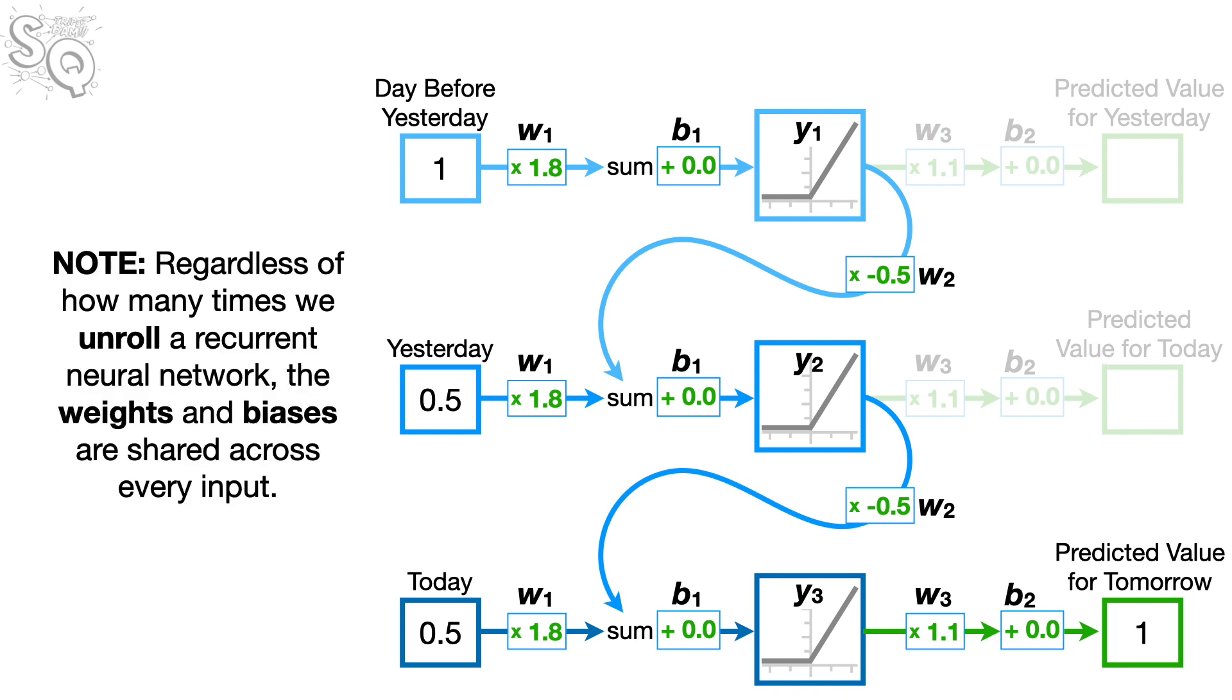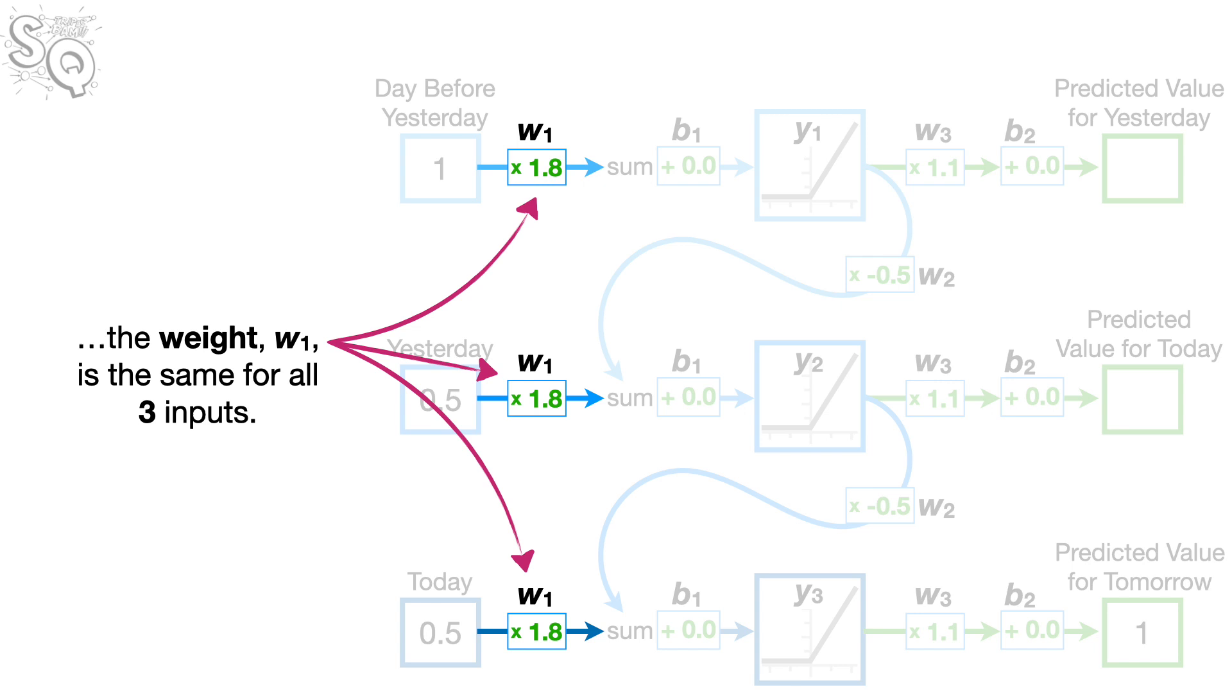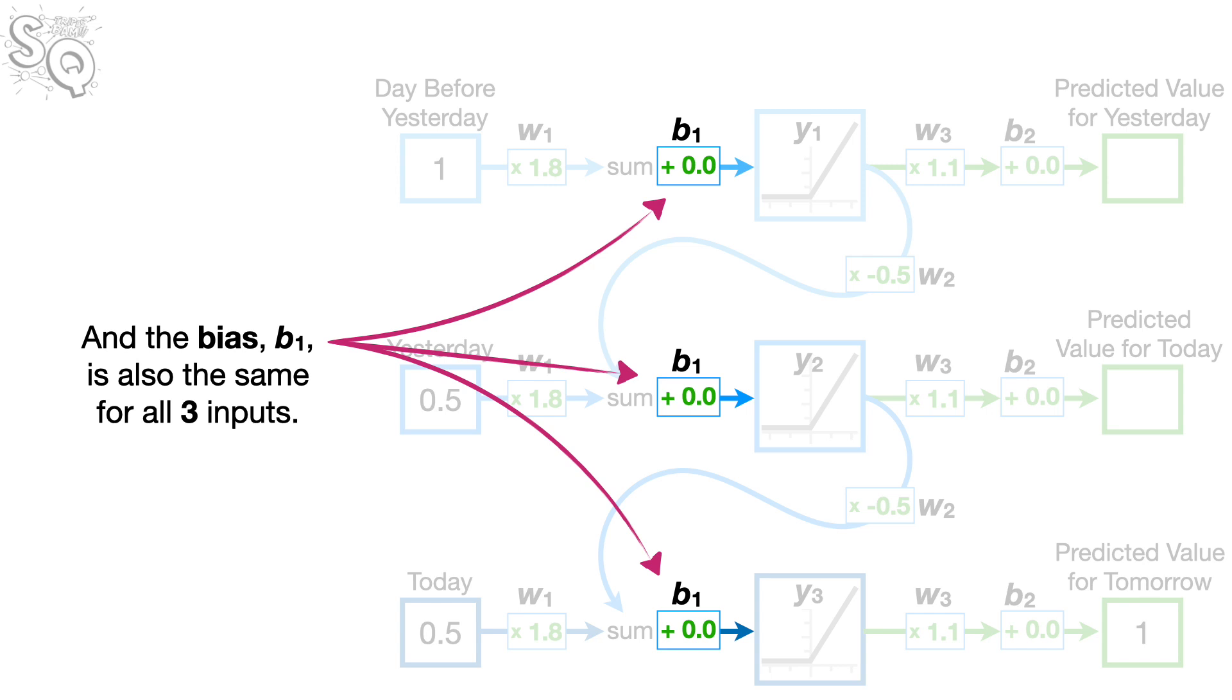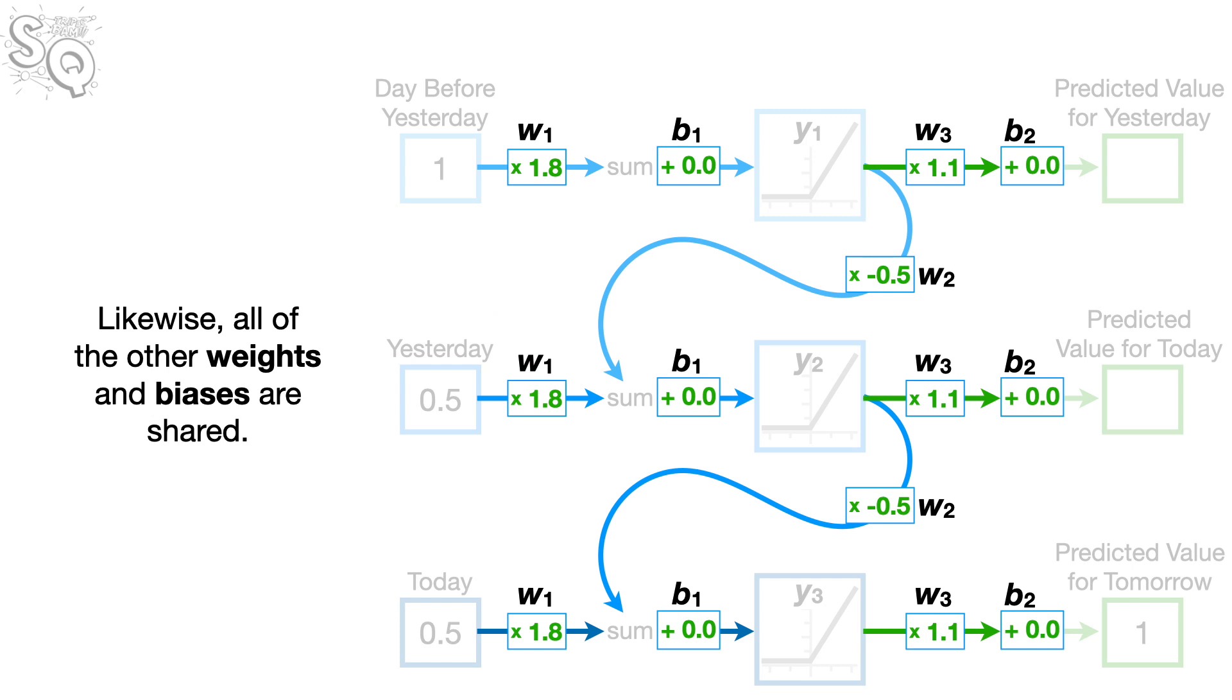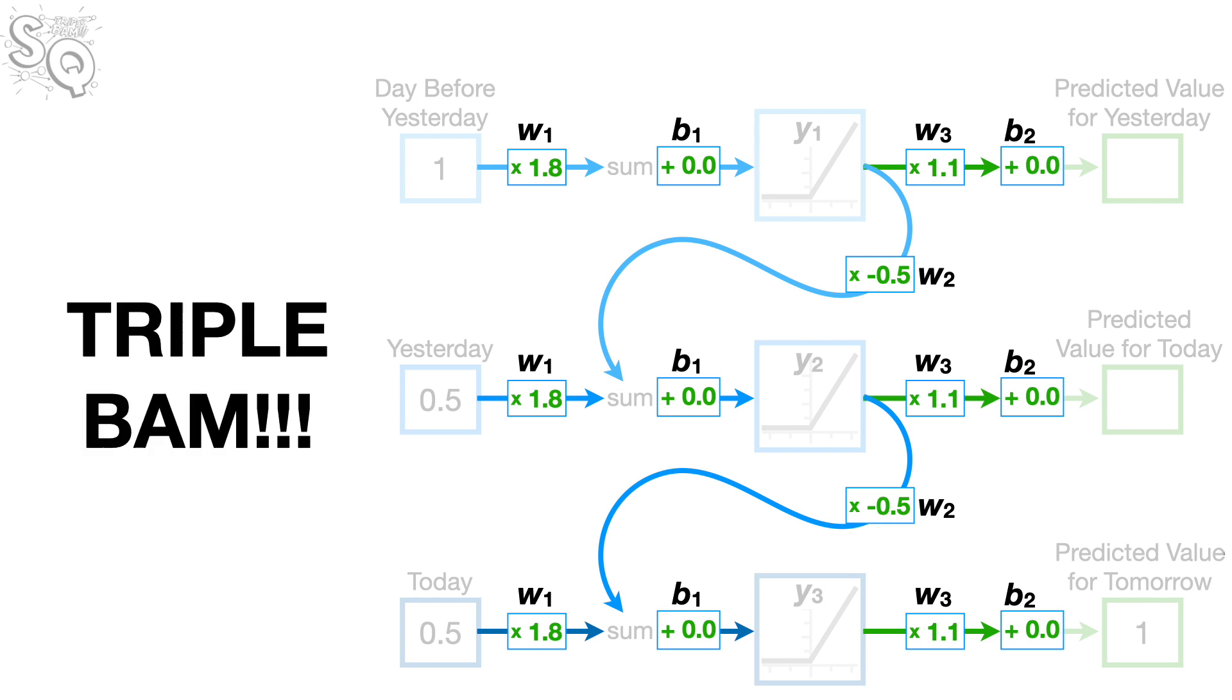Note, regardless of how many times we unroll a recurrent neural network, the weights and biases are shared across every input. In other words, even though this unrolled network has three inputs, the weight, W sub 1, is the same for all three inputs. And the bias, B sub 1, is also the same for all three inputs. Likewise, all of the other weights and biases are shared. So, no matter how many times we unroll a recurrent neural network, we never increase the number of weights and biases that we have to train. Triple bam!